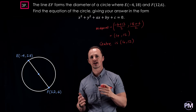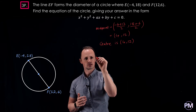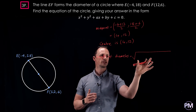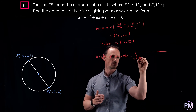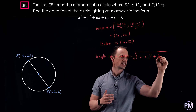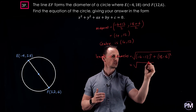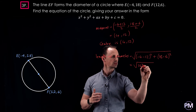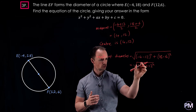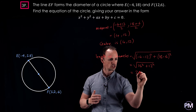Now that we know the centre, we'll find the radius by first finding the diameter — the length of the line between these two coordinates. We take the square root of the difference between the x coordinates squared plus the difference between the y coordinates squared. That's minus 4 minus 12, squared, plus 18 minus 6, squared. This gives us the square root of 16 squared plus 12 squared. 16 squared is 256, 12 squared is 144. Adding those gives the square root of 400, which is 20.